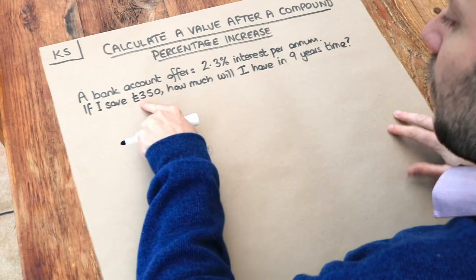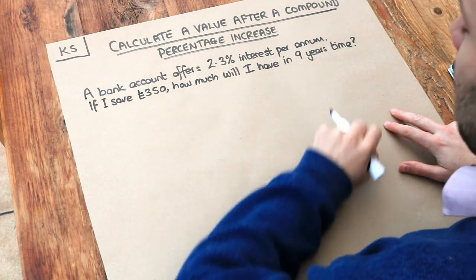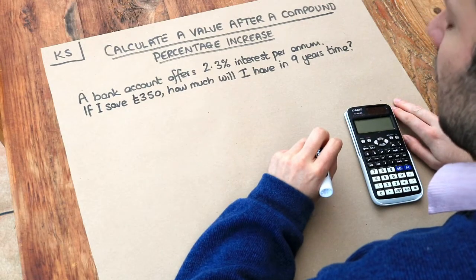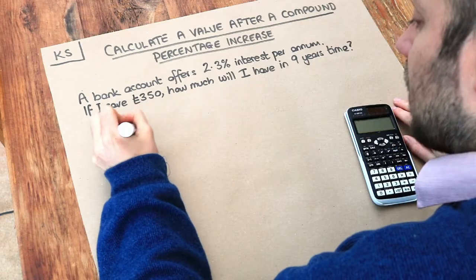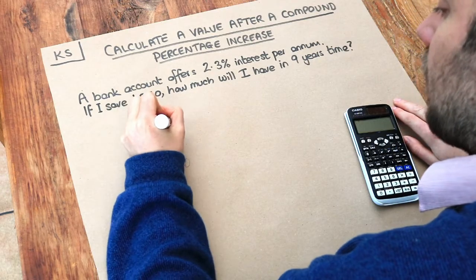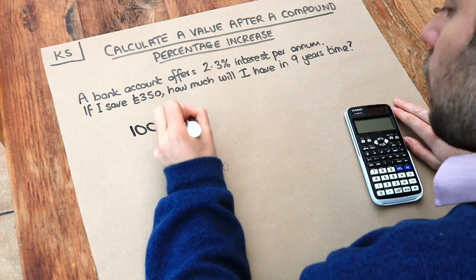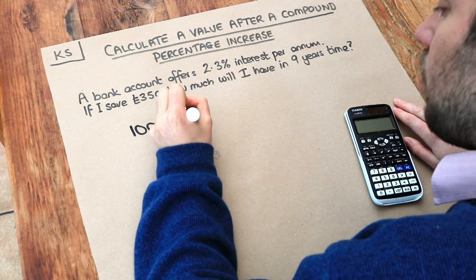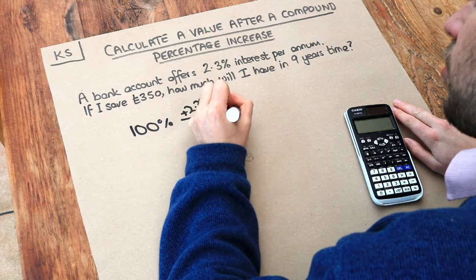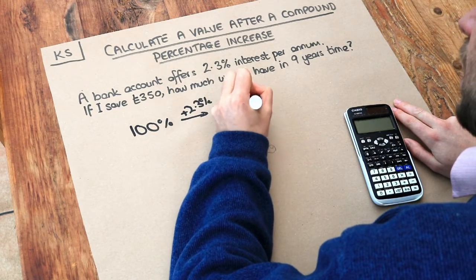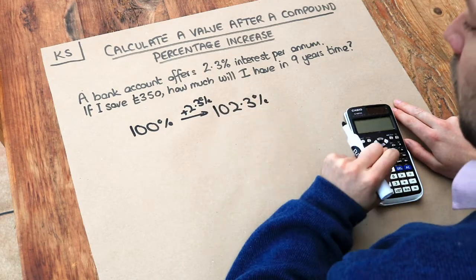So we save £350 and we want to know what we have in nine years' time. Now let's think what we'd multiply something by to add 2.3%. Everything starts 100% of its value. That means all of it. Now if it goes up by 2.3%, then we would have 102.3% of the value. That's going to be slightly more than what we originally had.